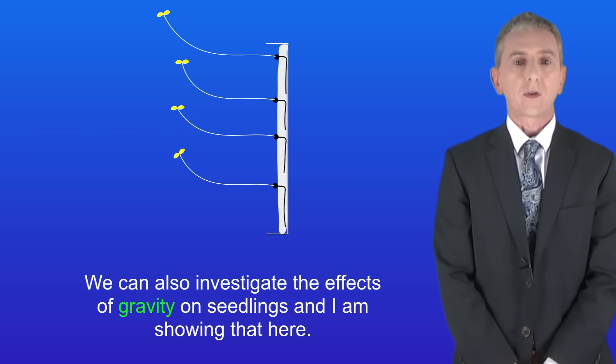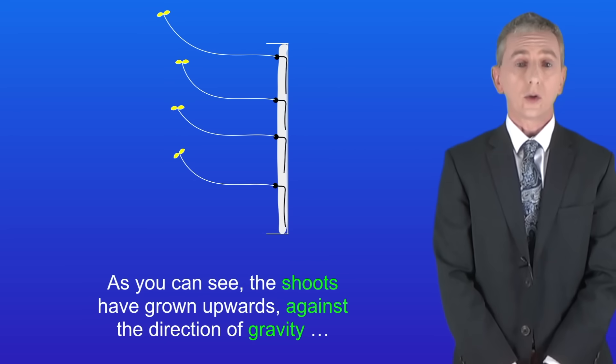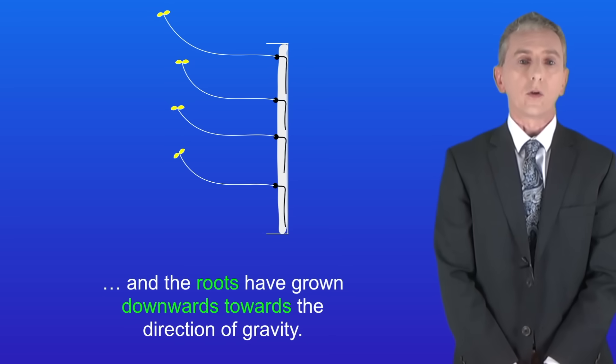Okay, now we can also investigate the effects of gravity on seedlings, and I'm showing you that here. In this case a dish of seedlings is placed on its side in the dark. As you can see, the shoots have grown upwards against the direction of gravity and the roots have grown downwards towards the direction of gravity.